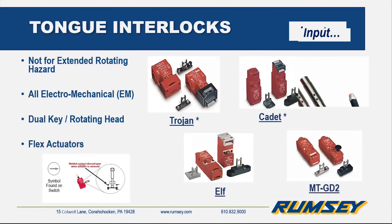We have the tongue interlocks — these are electromechanical devices that have been around for some time. You see the Trojan and the Cadet there, which are ones we normally have in stock. They have a rotating head, so there's some flexibility in mounting these devices. They also can be ordered with a flexible actuator — the keys with that black housing around them give some flexibility, so if there's any sag in doors or they get bumped, it can accommodate some of that movement. These are all hot links, so when you get the presentation, you can click on a link to go to the Allen Bradley website for that particular product.